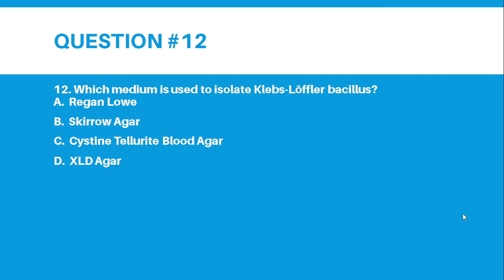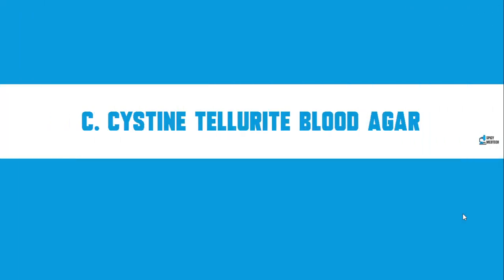Number 12. Which medium is used to isolate Klebs-Löffler bacillus? Letter A, Regan Lowe. Letter B, Skirrow agar. Letter C, Cysteine tellurite blood agar. Letter D, XLD agar. And the correct answer for number 12 is letter C, Cysteine tellurite blood agar.